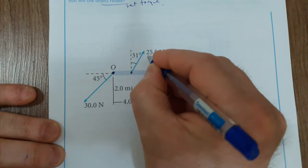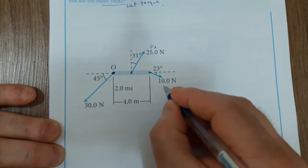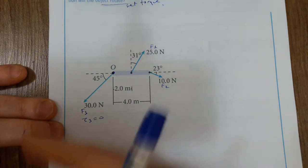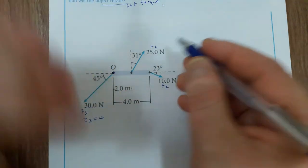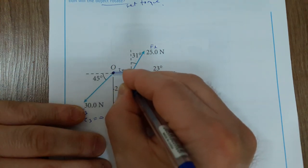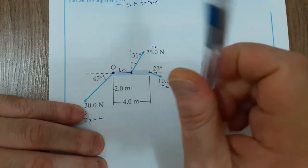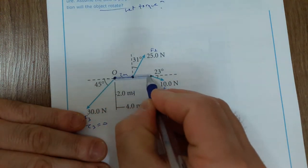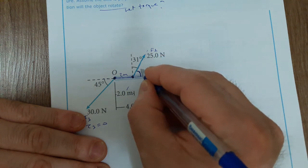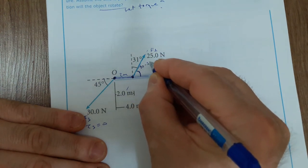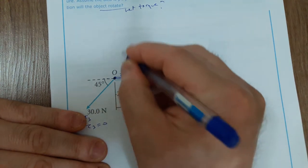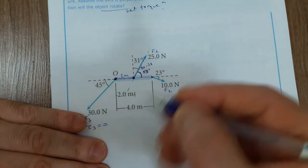Label the forces as F1, F2, F3. F3 produces torque 3 = 0. For F1: the distance from force to axis of rotation is 2 meters and force is 25 Newton. The angle between the force and the distance line is 90 minus 31 = 59 degrees. Using the pen method, this force causes counterclockwise rotation, so it's positive.